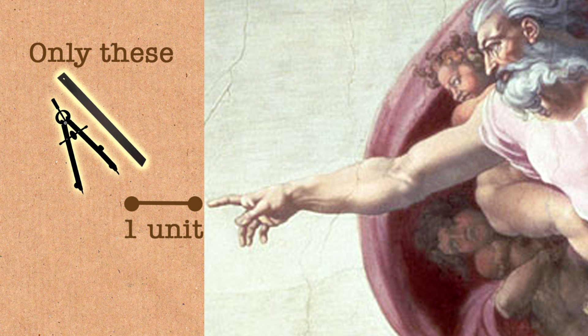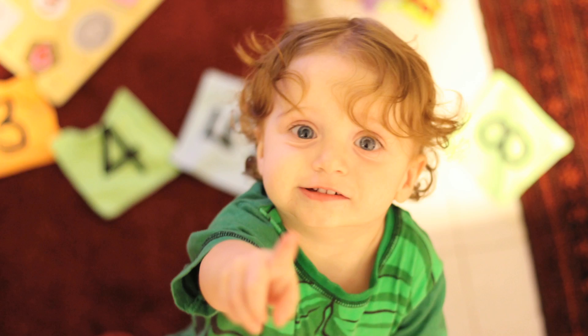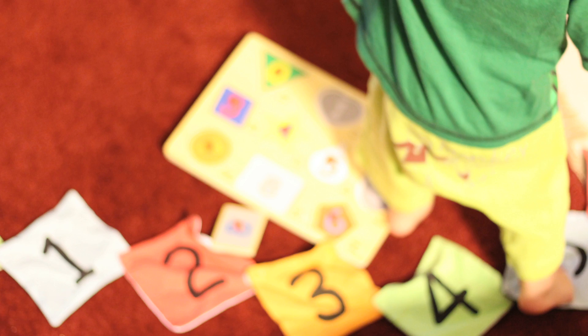Today when you start learning mathematics, even when you're two or three years old, you always start with numbers. But for Euclid and people in his time it was the opposite. They thought about geometry as being the basis of everything - shapes, points, lines, triangles being the fundamental objects. They thought of numbers only as something that arise from the geometry, so the questions they naturally asked were a little bit different.